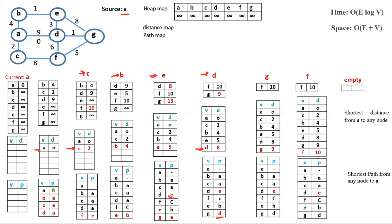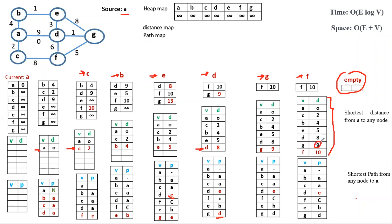Next we have two remaining vertices: F and G. We select G as the current node with distance 9. The only node connected to G in the list is F. The new distance would be 9 plus 5 equals 14, which is greater than 10, so we do not change anything. Next, the current node is F with distance 10. There are no nodes to relax, so we move F to the distance map. The heap map is now empty and we are done. The shortest distances from A are: to E is 5, to G is 9, and to F is 10.